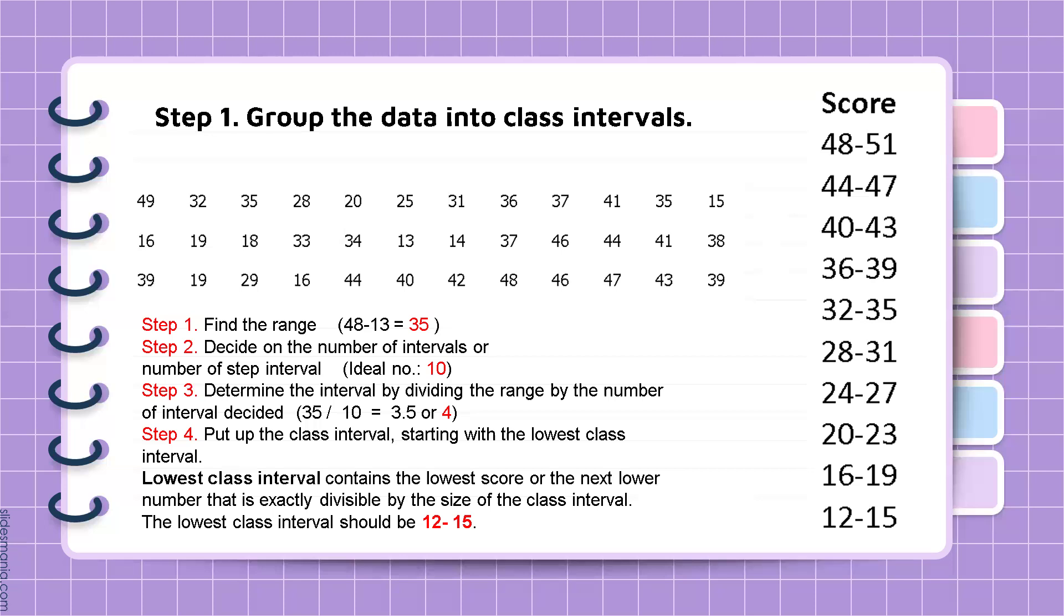Next step is to put up the class interval, starting with the lowest class interval. The lowest class interval contains the lowest score or the next lower number that is exactly divisible by the size of the class interval. So the lowest score that we have is 13, but it is not divisible by 4, which is the size of our class interval. So we go to the next lower number, which is 12, and 12 is divisible by 4. So we have our lowest class interval, which is 12 to 15.